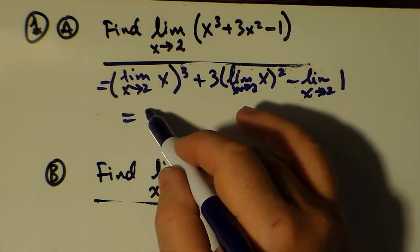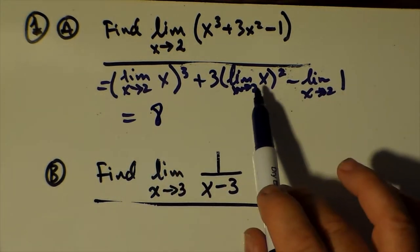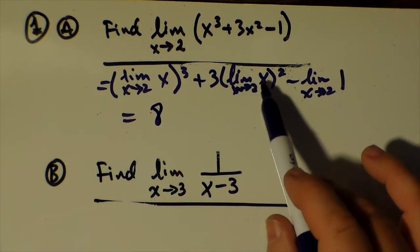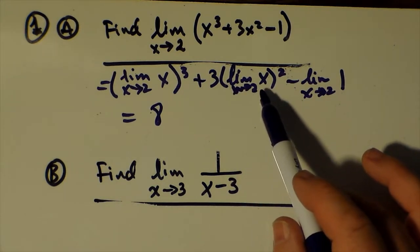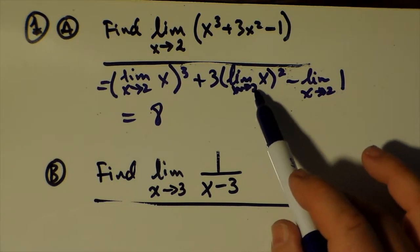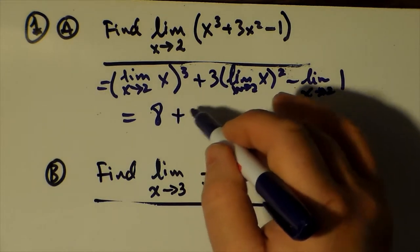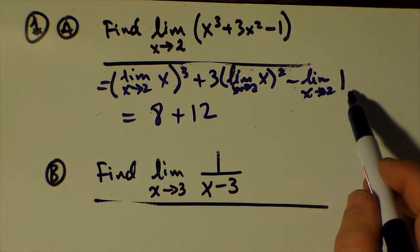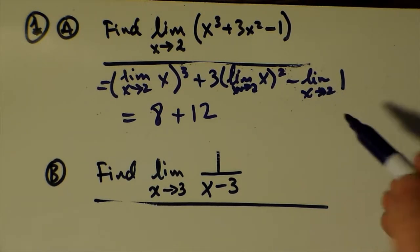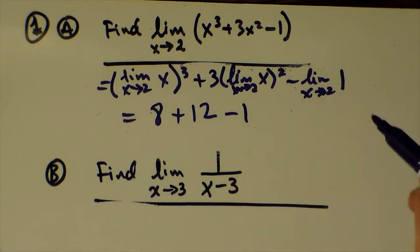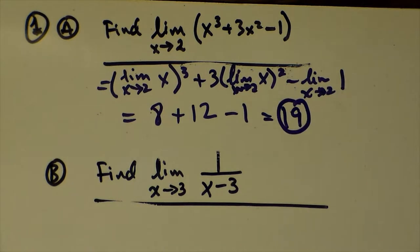The limit as x approaches 2 of x is just a direct substitution of that number, so we get 2 cubed which is 8. For the next term, the limit as x approaches 2 of x is 2; squared gives 4, times 3 is 12. The limit of a constant is just the constant, so the limit of 1 is 1. Subtracting: 8 plus 12 minus 1, our limit is 19.